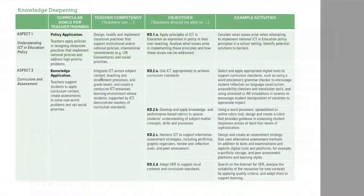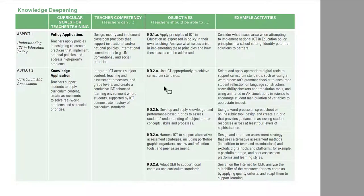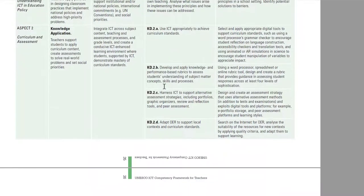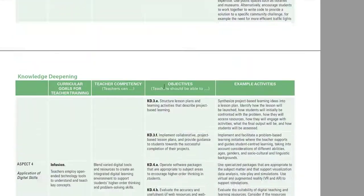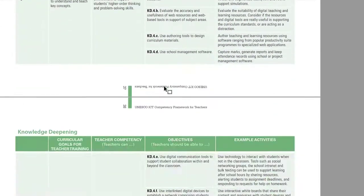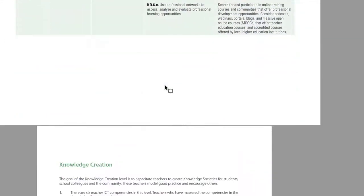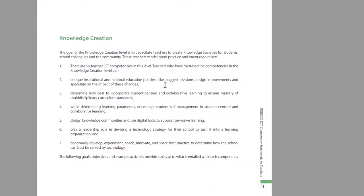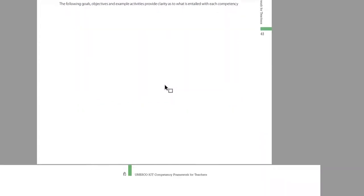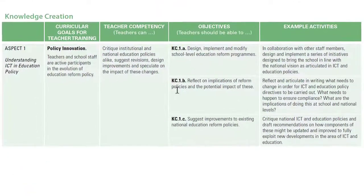The framework continues through the different levels. For example, on page 35 we have knowledge deepening, where the objectives and competencies will be different but are laid out in a similar format. You can then also arrive at the section on knowledge creation, which has a different set of competencies broken up into different types of objectives.